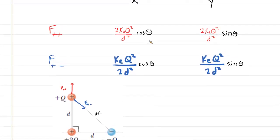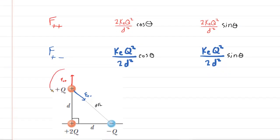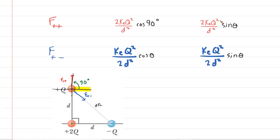We've created a table with the two forces, F(positive, positive) and F(positive, negative), broken into x and y components. For x components, we multiply by cosine of an angle; for y components, by sine of an angle. Focusing on F(positive, positive): superimposing an x and y axis at that force vector, which points straight up, the angle relative to the positive x-axis is 90 degrees. So the x component uses cos(90°) and the y component uses sin(90°).